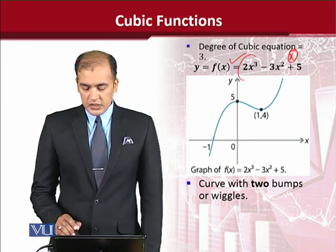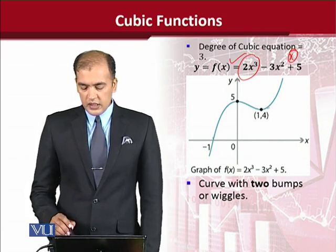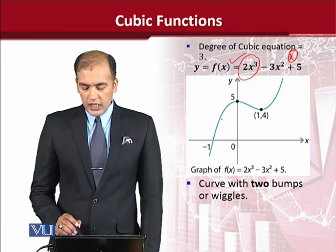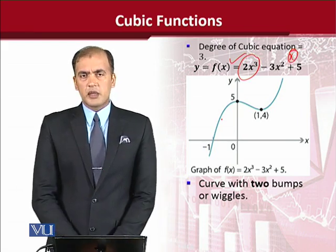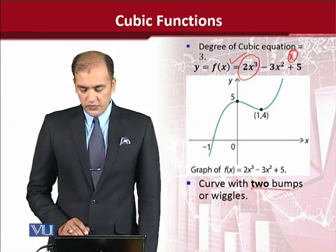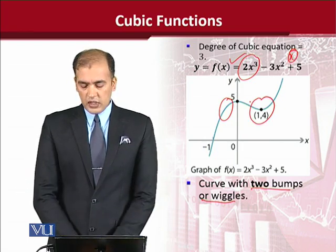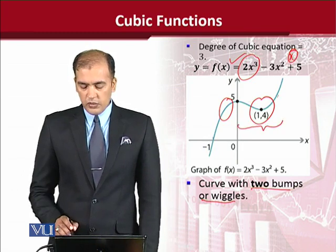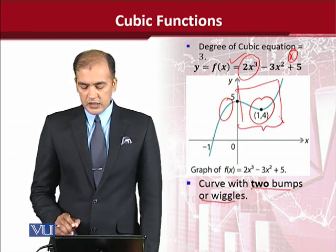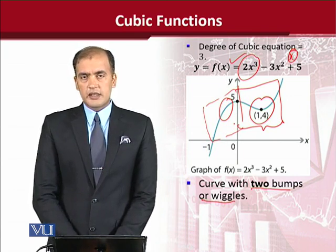This cubic function can be plotted, as done here. The graph shows a certain curved shape. The feature of this curved shape is that there are two bumps or wiggles in it — one here and one there. This is different from the quadratic function, which has only one bump, like a parabola. Here there seem to be two parabolas, meaning two bumps or two wiggles. This is how a cubic function is plotted on the graph.